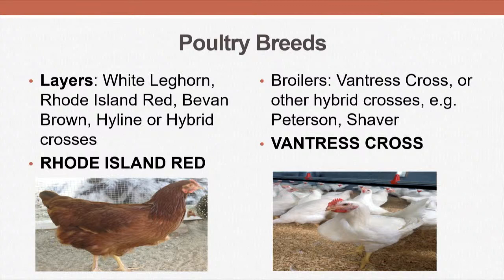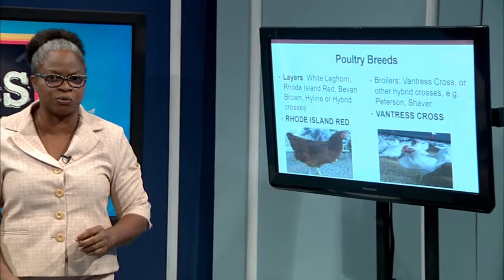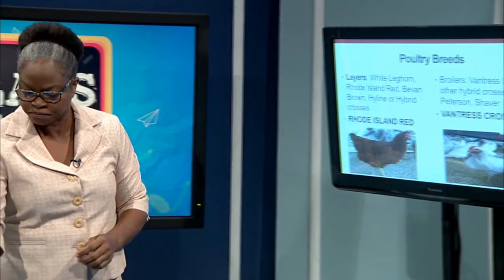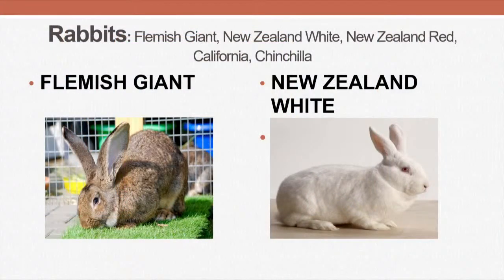The broiler breeds — you are seeing here the Vantress Cross, but there's also Peterson and Shaver as well. For rabbits, we have the most important breeds: the Flemish Giant that you are seeing there, the New Zealand Red. We also have the California and the Chinchilla.